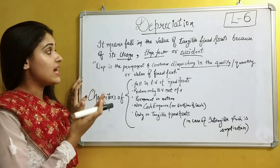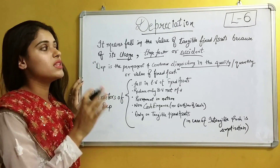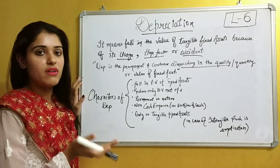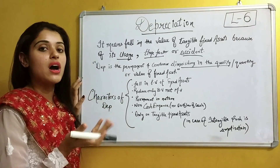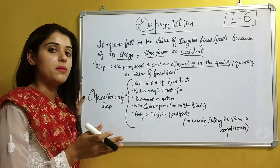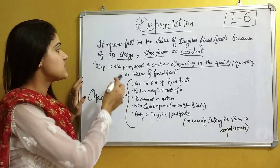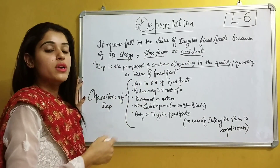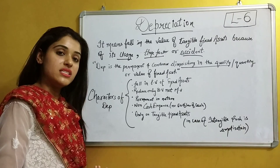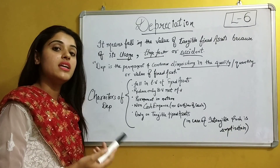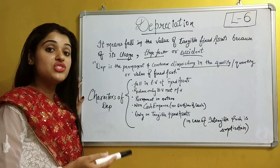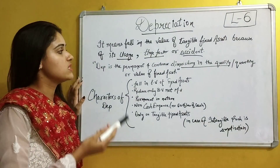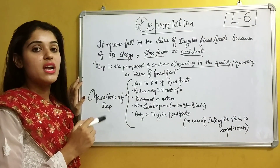So why does such a fall in value occur? Why does the value of our fixed assets fall? The first reason is because of usage. When we use our assets, there is wear and tear of the assets, and such wear and tear causes depreciation.